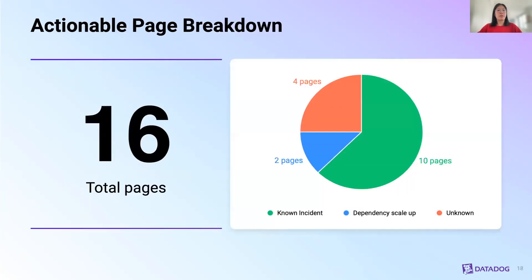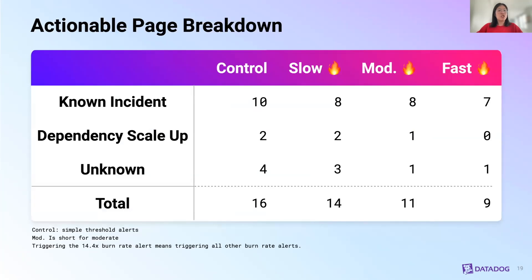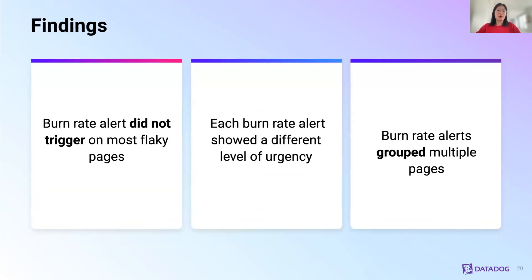Looking at just the pages that included manual action, we can see that the majority were from known incidents. This table shows that burn rates triggered on most of the actionable pages. We also see that when there is a known incident, the high burn rate was triggered. On dependency scale-ups and unknown pages, the slow and moderate burn rates were triggered. From running this experiment, we found that burn rate alerts did not trigger on most flaky pages — a really good and promising result. Each burn rate alert showed a different level of urgency. And burn rate alerts grouped multiple pages, meaning our simple threshold alert would page consecutively while our burn rate alert would only page once.